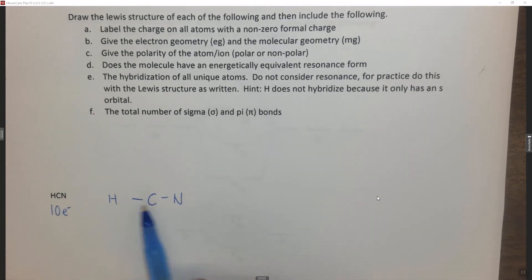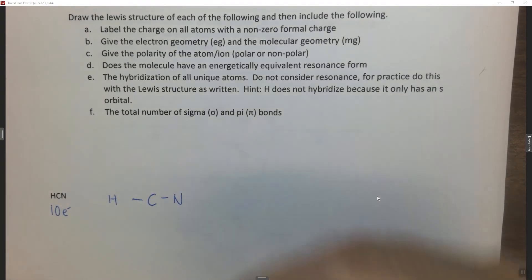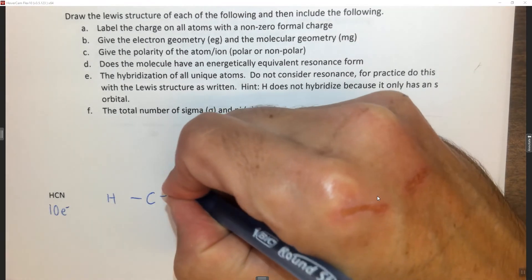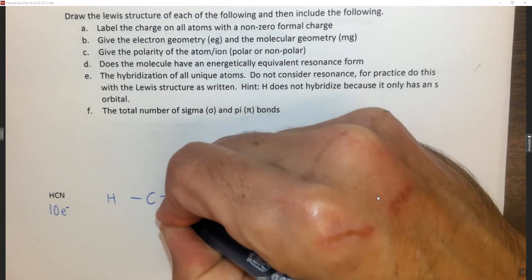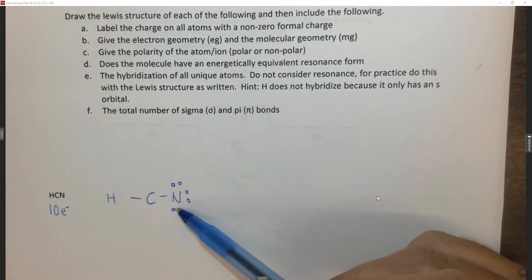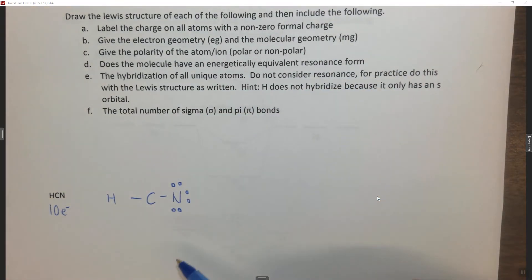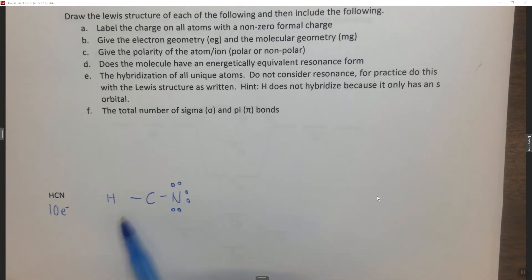Alright so now we've used 2, 4 of our 10 electrons. Now I'm going to start filling the octets of the outside atoms. So 4, 6, 8, 10. I've now filled the octet of the nitrogen. Now the problem with this Lewis structure is that carbon still doesn't have an octet.